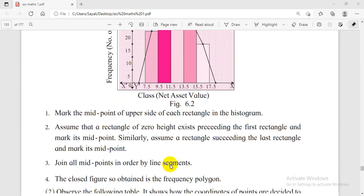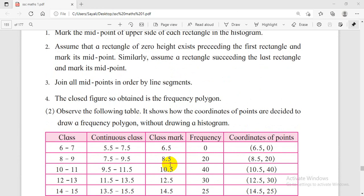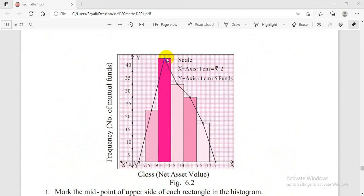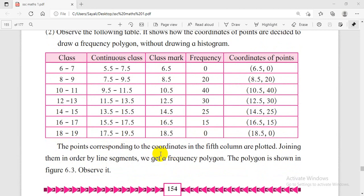Without histogram, you need to find where to mark the point. The x coordinate will be the midpoint of the class interval, the class mark. The y coordinate will be the frequency. We prepare coordinates of the points.